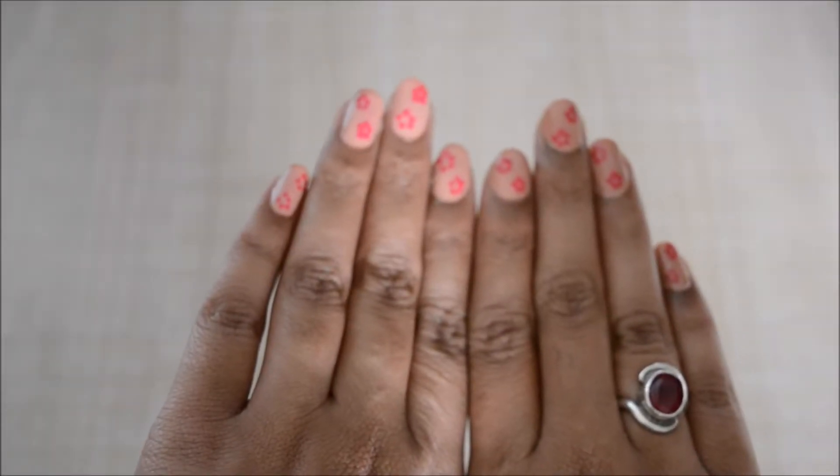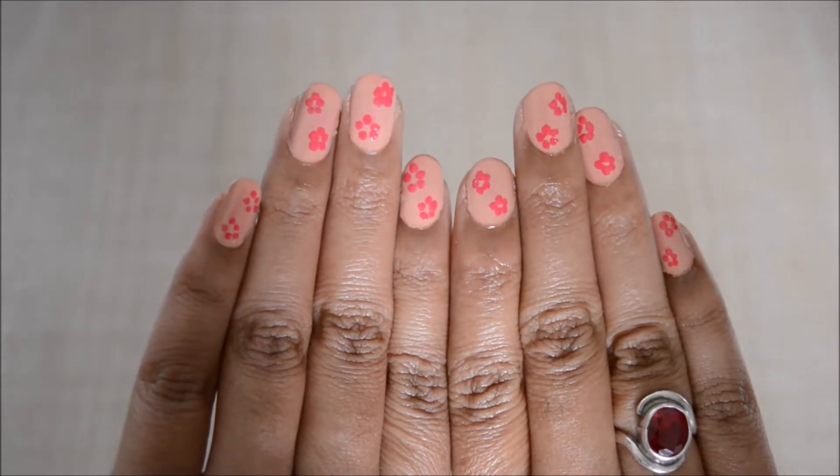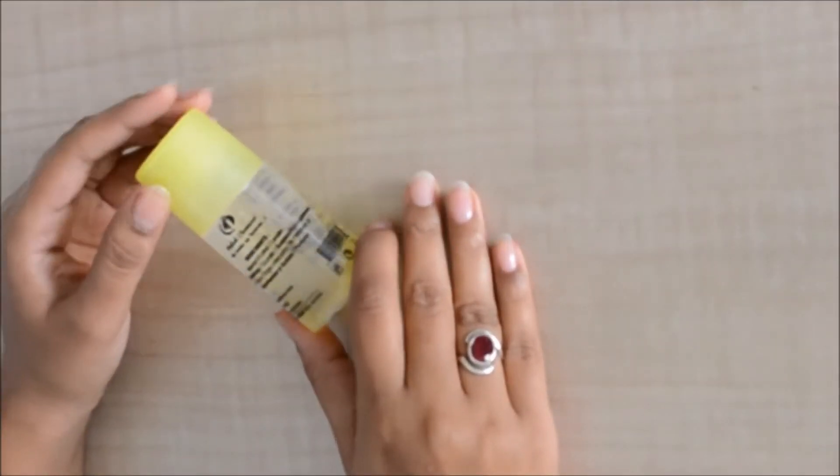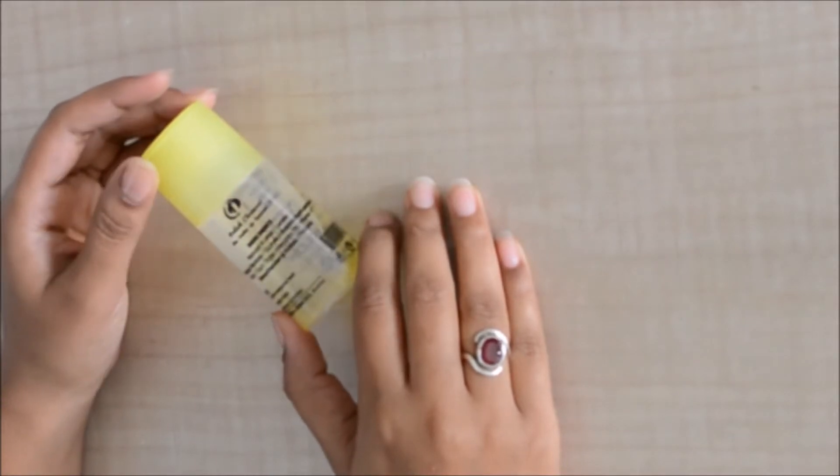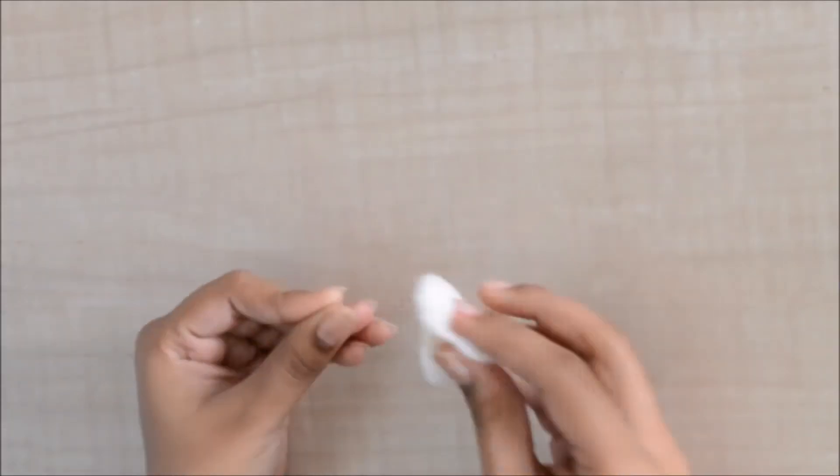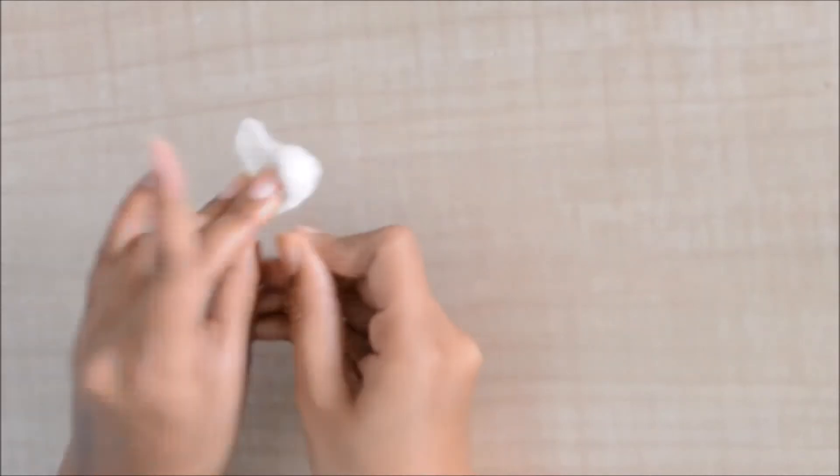Without wasting any more time, let's begin with the video. The first thing that I want to do is prepare my nails for the nail art. I'm going to take some nail paint remover and pour it on a piece of cotton and wipe my nails with it. I'm doing this to get rid of any kind of residues which might be sitting on my nails.